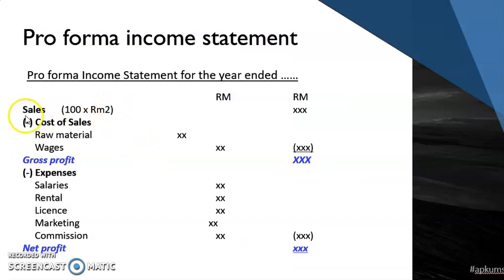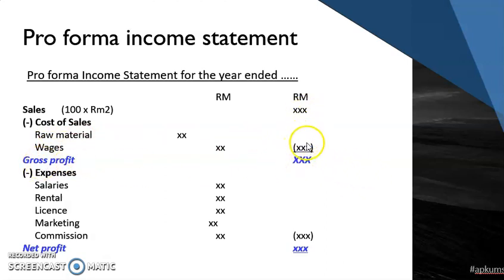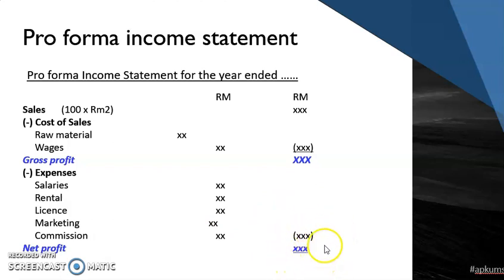When we look at the proforma income statement, it starts by showing the sales for the year, minus the cost of sales — that means the cost of preparing the product for sale, such as materials and wages. After that we get the gross profit: sales minus cost of goods sold equals gross profit. The gross profit minus other expenses such as salaries, rental, and commissions gives us the net profit — the projected profit for the company for a certain period, for example one year.